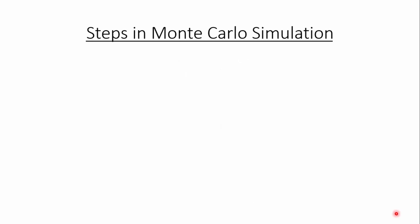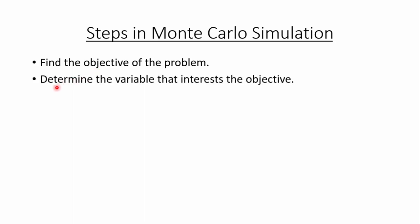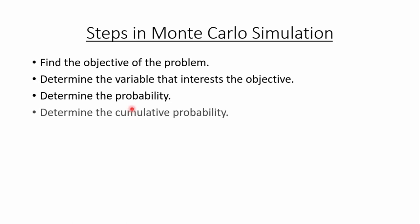First of all let us have a recap of the steps in Monte Carlo simulation. The first step is to find the objective of the problem — we need to find whether our objective is to maximize or to minimize a value. Then we need to determine the variable that interests the objective, identifying the variable which affects the objective function. Next is to determine the probability, which is either given directly or we calculate it, and then we calculate the cumulative probability.